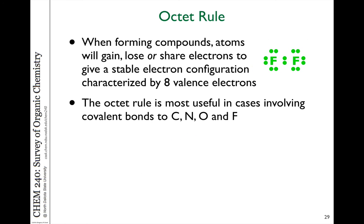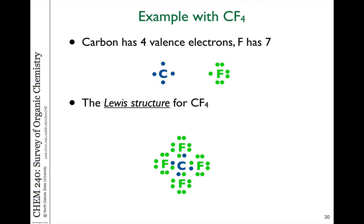When forming compounds, ionic bonds can be formed by gaining or losing electrons. Covalent bonds are formed by sharing electrons. In all cases, we're trying to achieve filled energy levels to be stable.